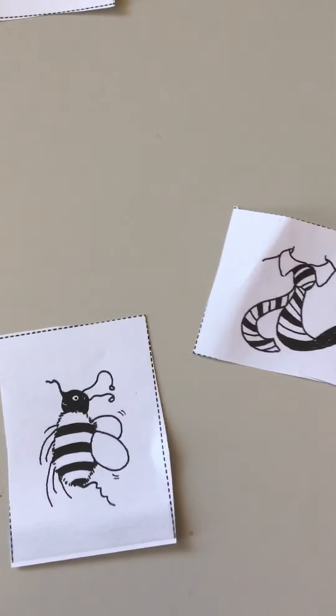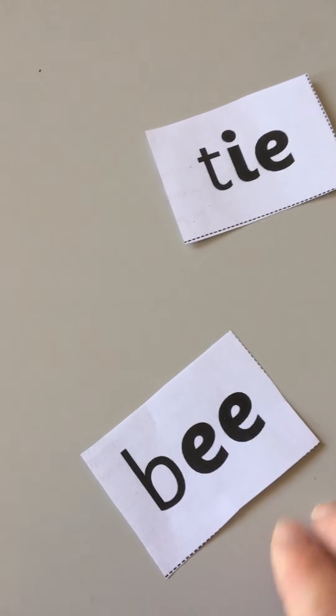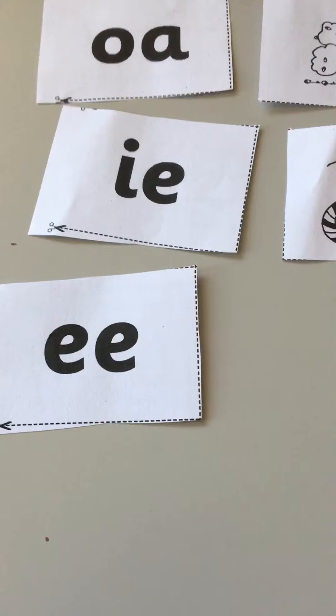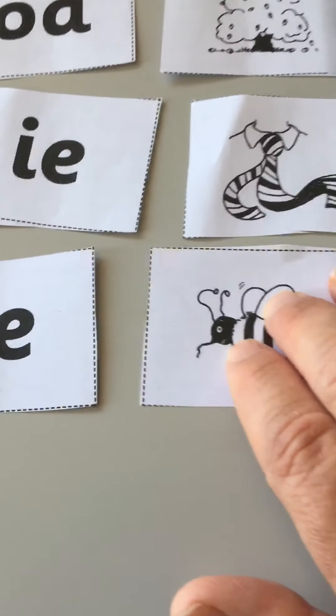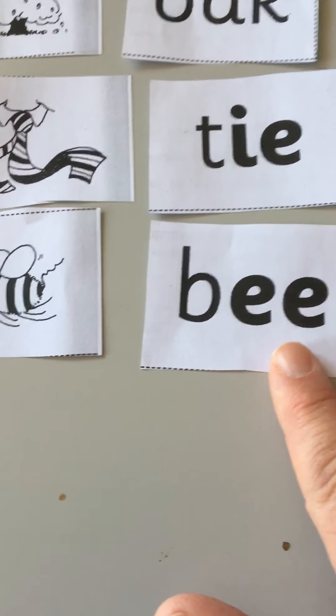Now we're getting down to IE, IE. We want the tie. Here it is, and we want the word tie. That's right. TIE. And the last one, EE would be a bee, and bee, EE, bee.